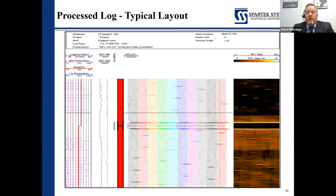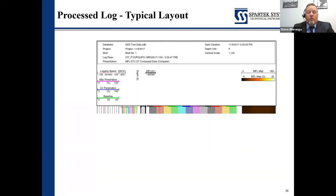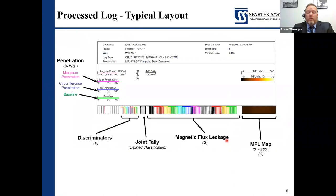Once all that comes back to surface and we've merged everything together, this is a typical layout of the final product log. On it we'll have all of the magnetic flux leakage curves from each pad — eight per pad — and the discriminators, which may be displayed as max curves, min-max curves, or individual discriminator curves. We'll also have the maximum penetration and circumferential penetration, as well as a baseline set for the expected size of pipe, processed back to that. And the last element, just for easy visualization, is the MFL map.